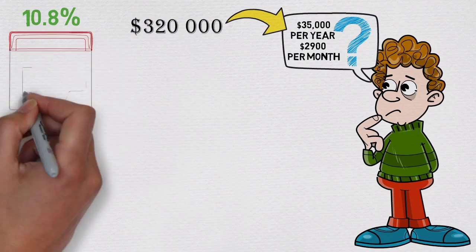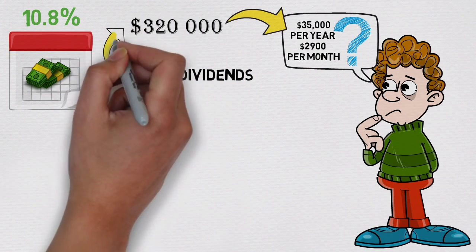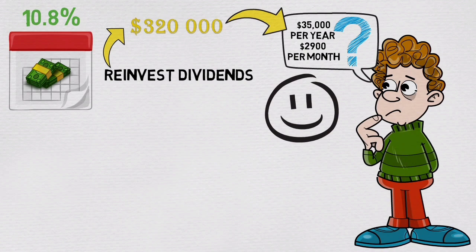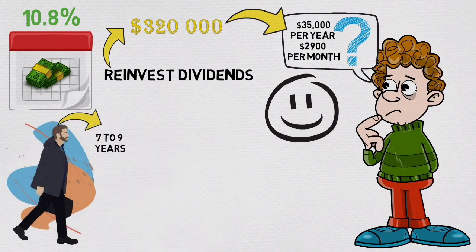One bonus strategy new investor could use is to invest smaller amounts monthly and reinvest dividends, thus making his goal of $320,000 faster. If investor stays patient, even with small steps, he can become financially independent in 7 to 9 years.